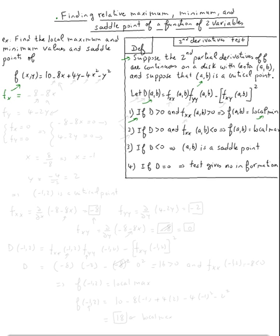The partial derivative with respect to x: the derivative of -8x is -8, and 4y is constant so it's zero, giving f_x = -8 - 8x. For the partial derivative with respect to y: the derivative of 4y is 4, and then we get -2y, so f_y = 4 - 2y.